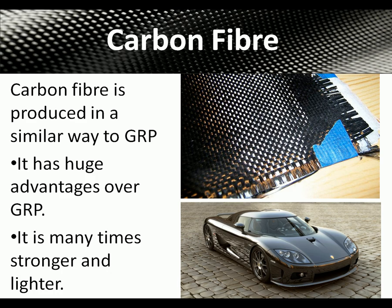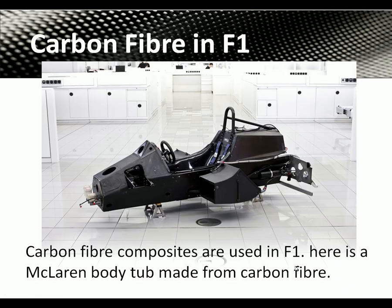Carbon fiber has a lot of advantages over GRP: it's much lighter and much stronger, but it is more expensive. It is used for high-end sports cars. Carbon fiber is also used in Formula One — here's a McLaren body tub — because it's very lightweight, very rigid, and very strong.